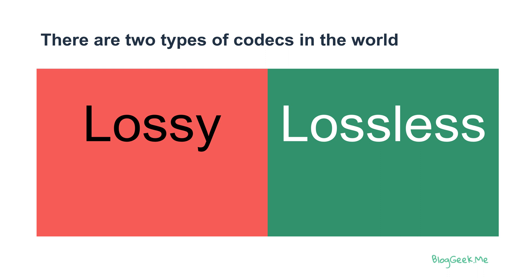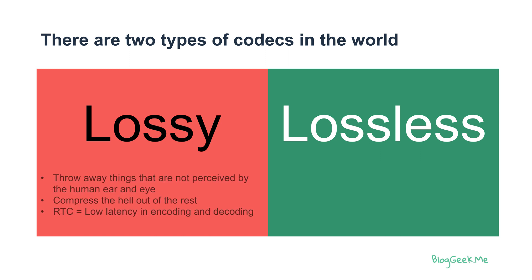Why do we need lossy codecs? With lossy compression we can compress a lot more aggressively. And since what we're trying to do is send media, there are things we can actually throw away — for example, things that are not perceived by the human eye or the human ear. Once we throw these away, we can compress everything else. That is the purpose of lossy codecs.